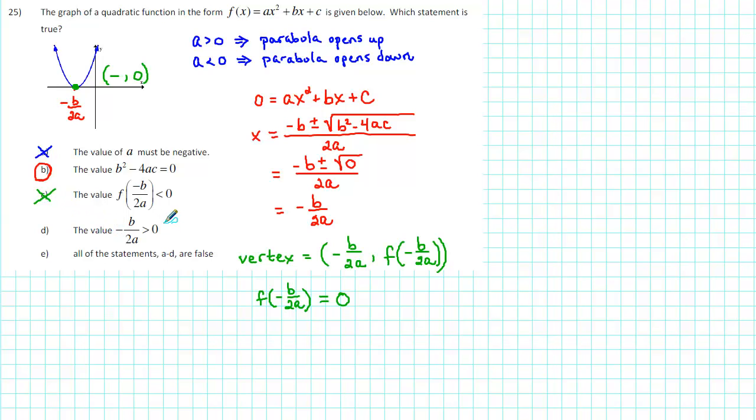The next statement, the value -b/2a is greater than 0, indicates that the x-value of the vertex is positive. We've already stated that the x-value of the vertex is negative. So that is a false statement.